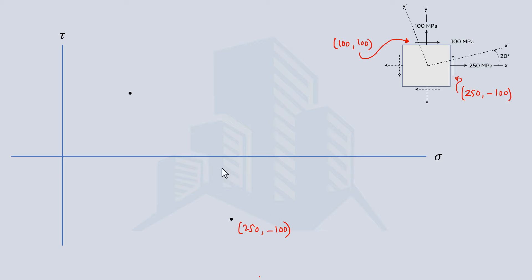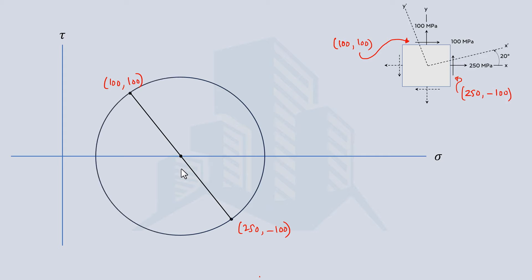The first point has coordinates (250, -100) and the second point has coordinates (100, 100). Joining these two points gives us the diameter of the Mohr circle, and the point where this line crosses the normal stress axis is the center of the Mohr circle. We can then draw the full Mohr circle. For Part 1, since the element is rotated 20 degrees counterclockwise, on the Mohr circle this is doubled to 40 degrees, so the diameter is rotated by 40 degrees.